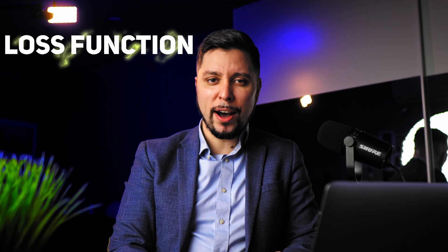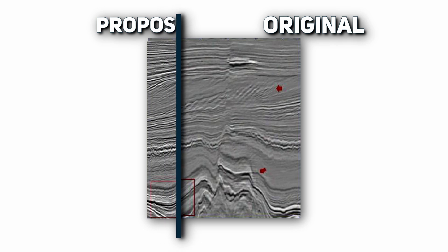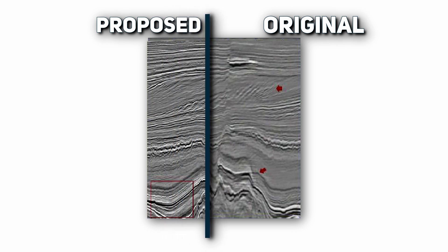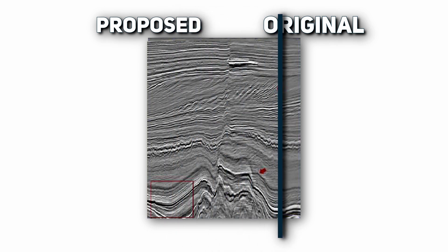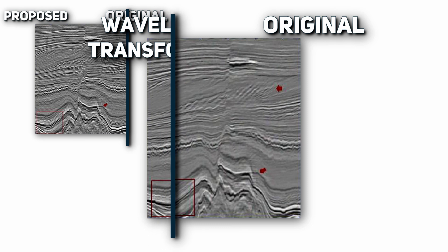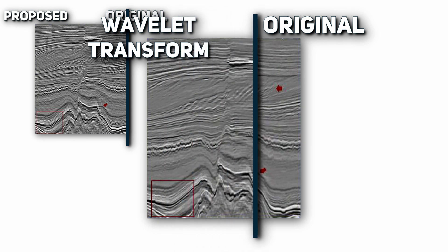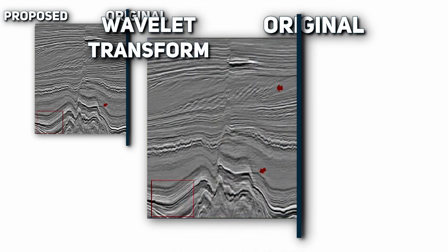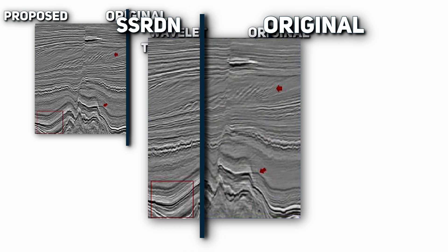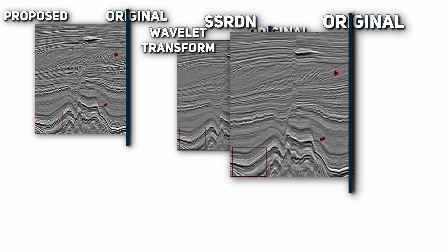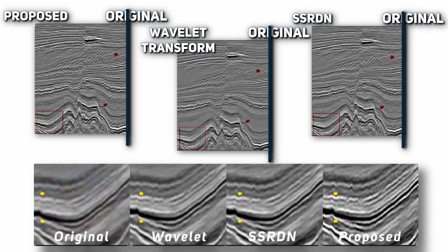Training GANs can be challenging and requires careful tuning of the architecture, loss function, and training parameters. The algorithm was put to the test using actual seismic data and the results speak for themselves. It was compared to the traditional Wavelet Transform and SSRDN methods. The structures in the profile are clear, and the continuity of events and resolution of weak reflection layers affected by noise and low resolution is improved.